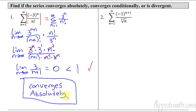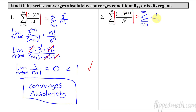Now let's do an example where the absolute value doesn't converge. First, check the absolute value — rewrite it as a new series from n equals one to infinity. Taking the absolute value knocks out the alternating part: one raised to n plus one — well, one raised to anything is just one. So I can rewrite that as one over the cube root of n, which is the same as n raised to the one-third.